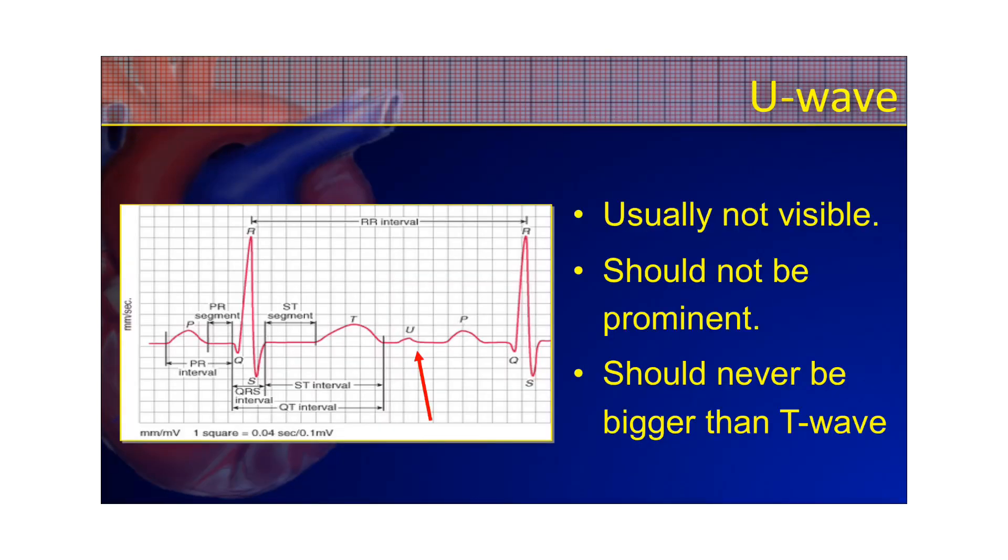I mentioned the U-wave, and you might have been wondering, what is a U-wave? It's usually not visible. It's not prominent. It shouldn't be prominent. Sometimes different electrolyte abnormalities can cause it to be more prominent. And it should never be bigger than the T-wave. That would be some sort of abnormality or pathology. And they don't really know what causes the U-wave. It's kind of assumed that it's repolarization of the ends of the Purkinje fibers.